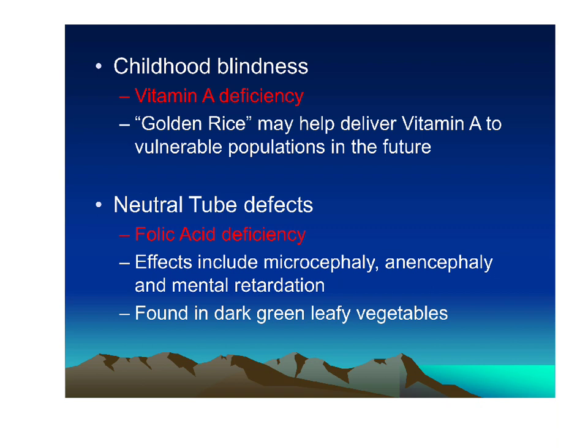Neural tube defects are conditions affecting the closure of the spinal cord during fetal development — like spina bifida or brain malformations. They result from folic acid deficiency and are fairly common even in developed nations. Effects include microcephaly, where the brain doesn't develop correctly, and anencephaly, where higher brain structures don't develop — usually leading to death shortly after birth. In the U.S., prenatal vitamins contain folic acid, but in the developing world this is hard to access, so neural tube defects are fairly common.